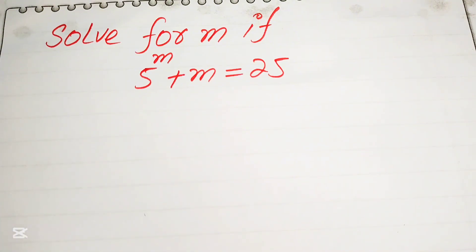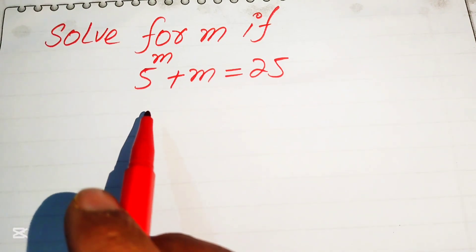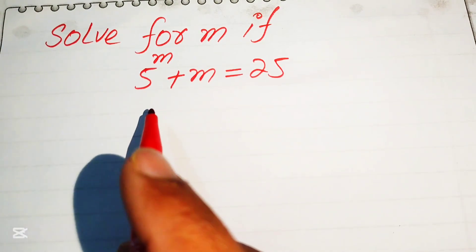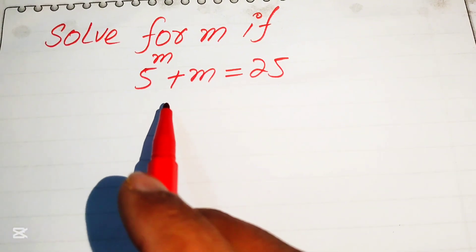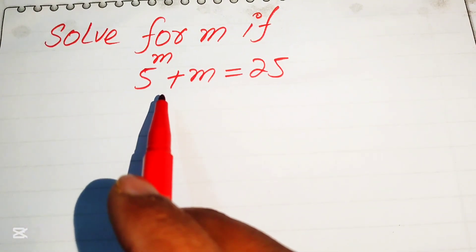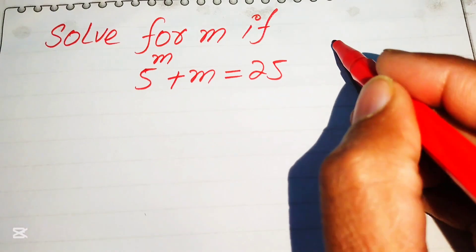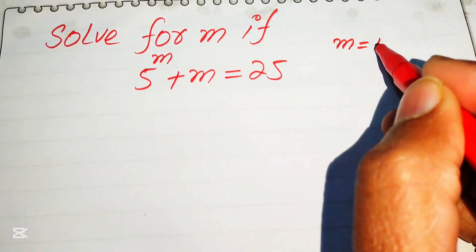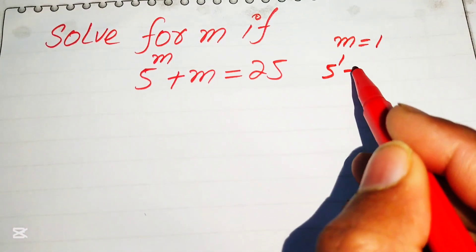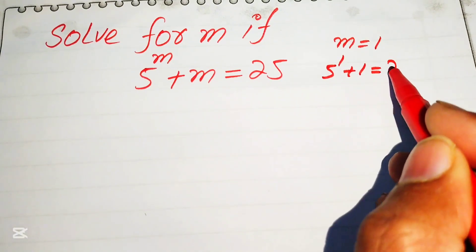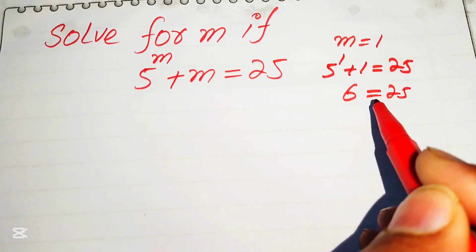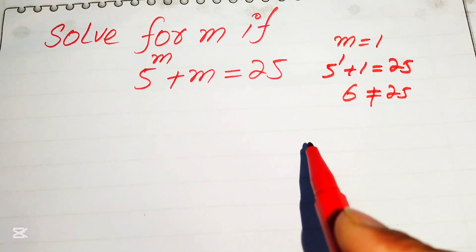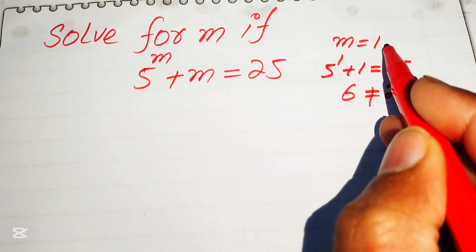First we find the interval in which the value of m lies, so we can find the value of m by inspection. If we put m equals 1, then 5 to the power of 1 plus 1 equals 25, which gives 6 equals 25 — and 6 is not equal to 25.